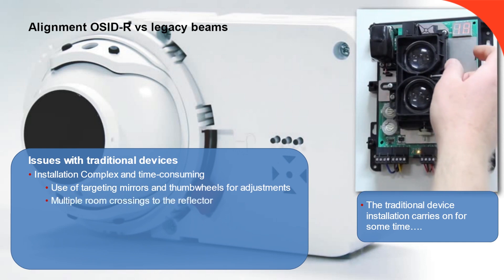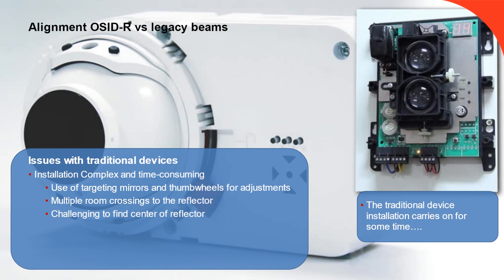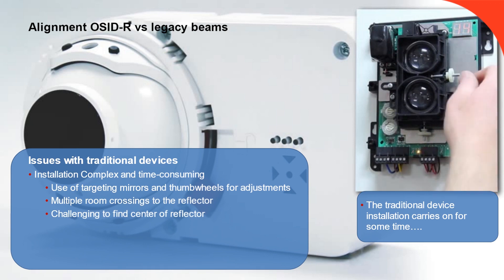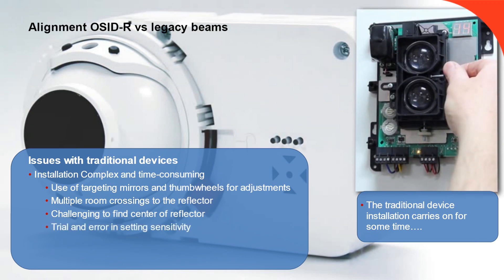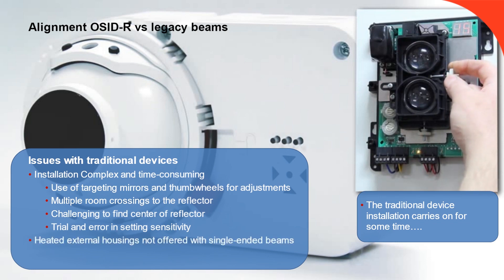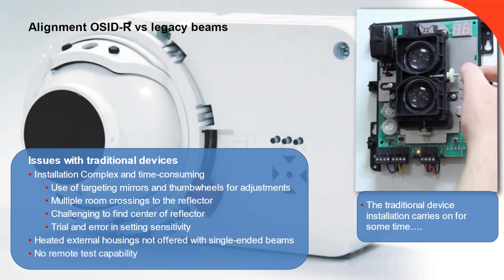The next step involves using the thumb wheels to try and get the LED readout to the highest possible figure, representing the accuracy of the device. Once the user achieves this, or gets bored trying, they can start the sensitivity configuration, often with a nagging feeling that they could have done better with the alignment. Heated enclosures are not available and there is no remote test facility. Now, where did I put those ladders?